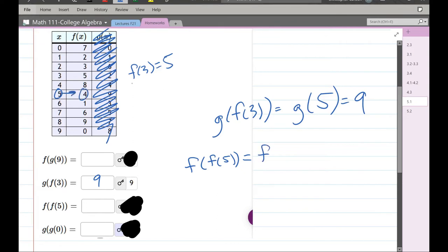So f of 5 equals 4. I'm replacing f of 5 with a 4. Now I'm going to take 4 and f it, and the output is 8. So my final output is 8.